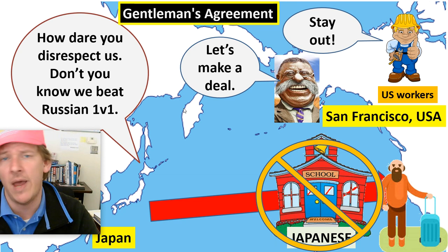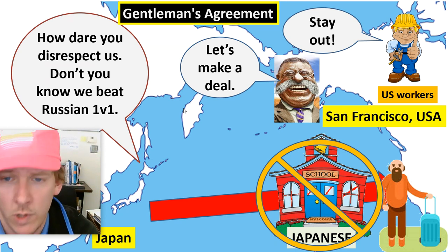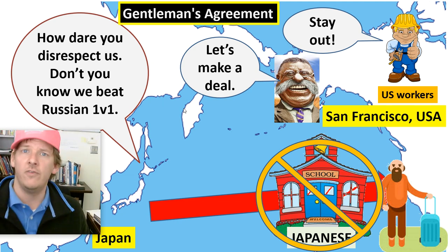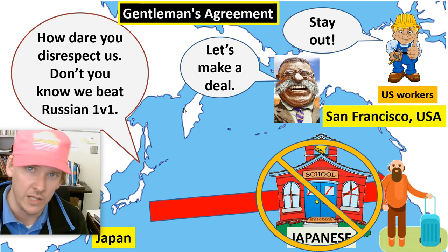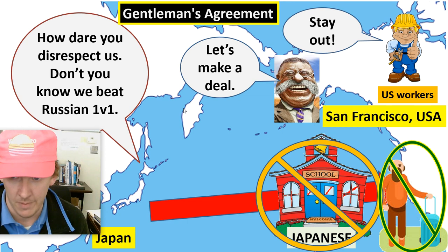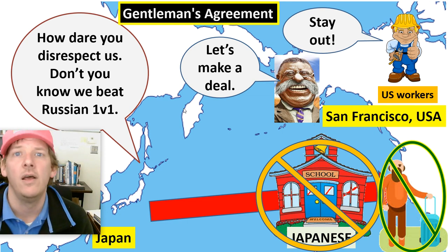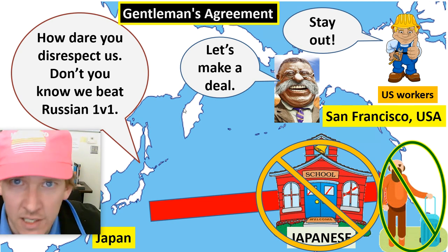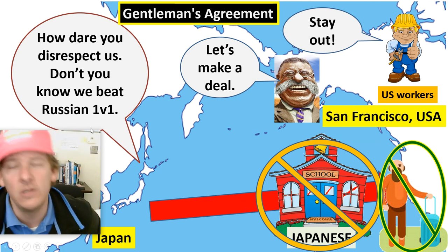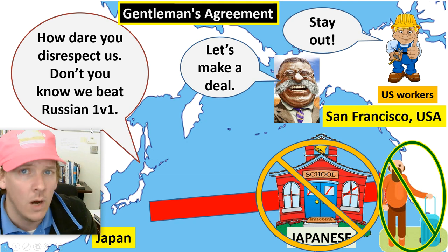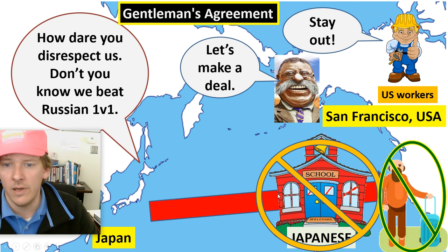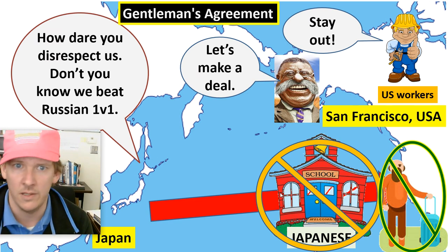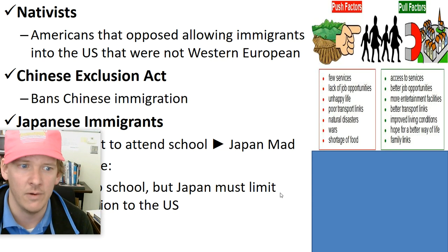His plan was called the Gentleman's Agreement. He said: Japan, I know you feel disrespected. Your children are no longer going to be segregated or forced into separate schools. But you've got to stop coming to our country. It's kind of like the Chinese Exclusion Act. Because we want you to save face — we know you beat Russia — we'll treat your Japanese children with the same rights as American children. That's the Gentleman's Agreement. Kind of racist still, but done.